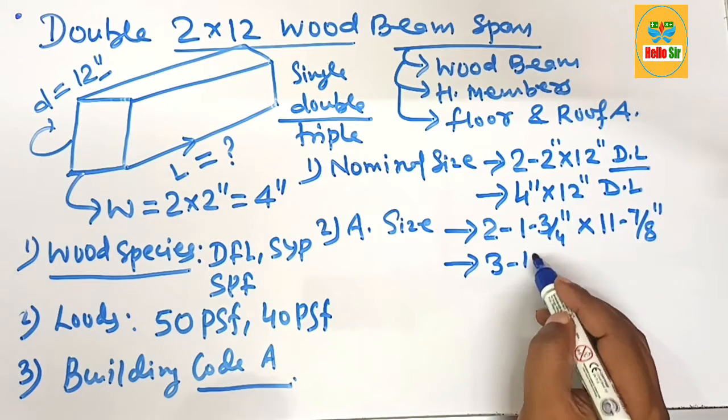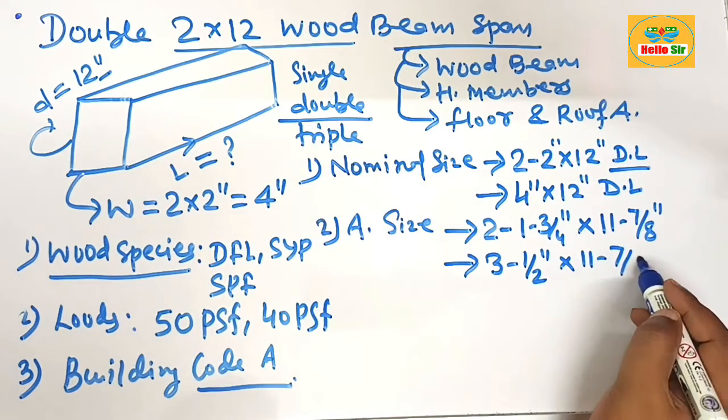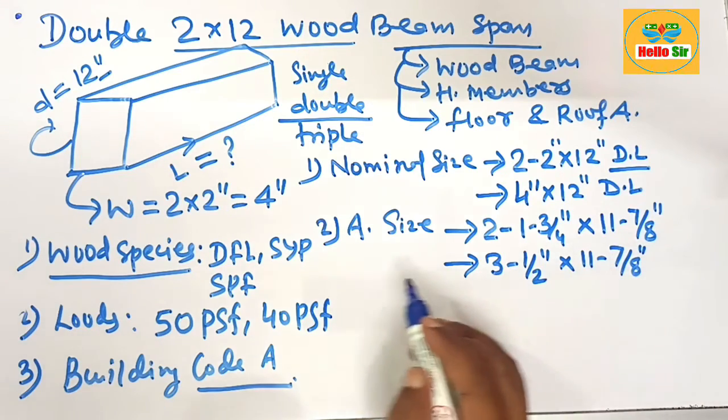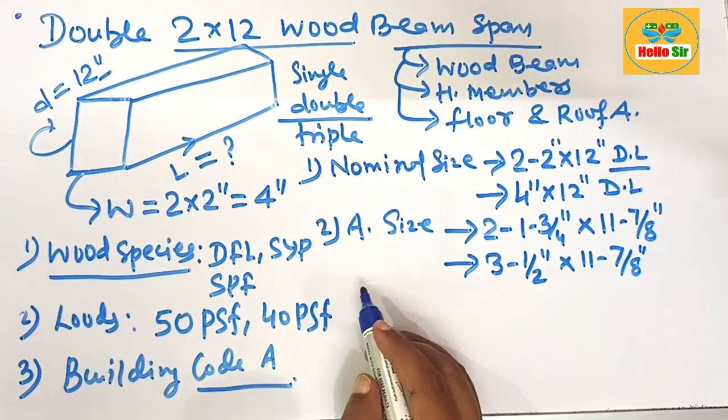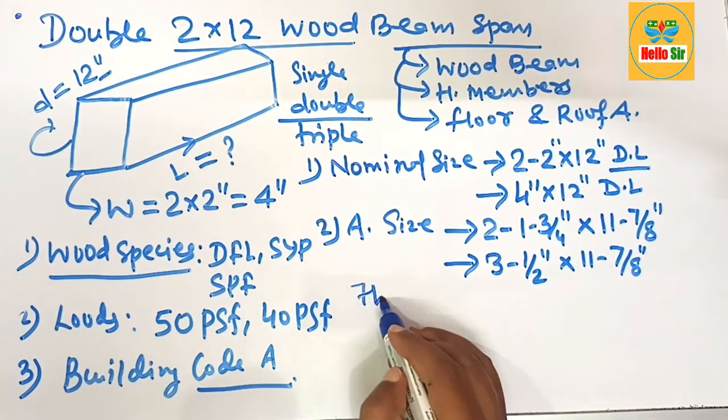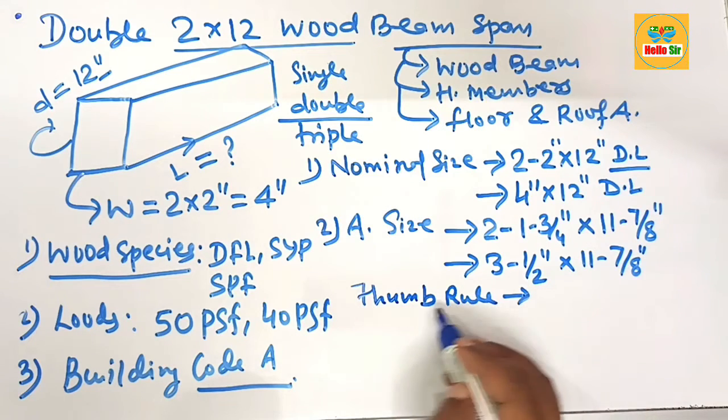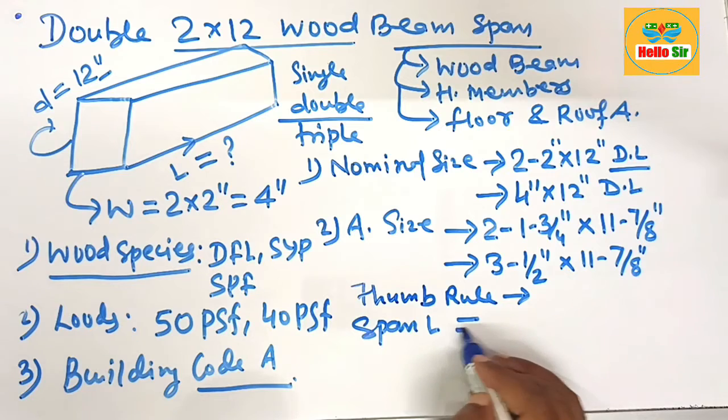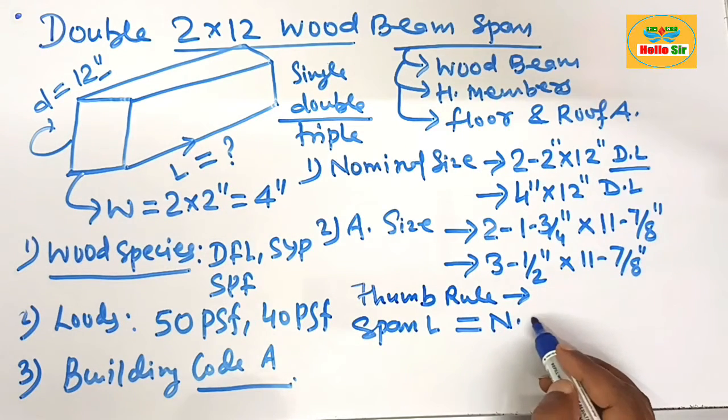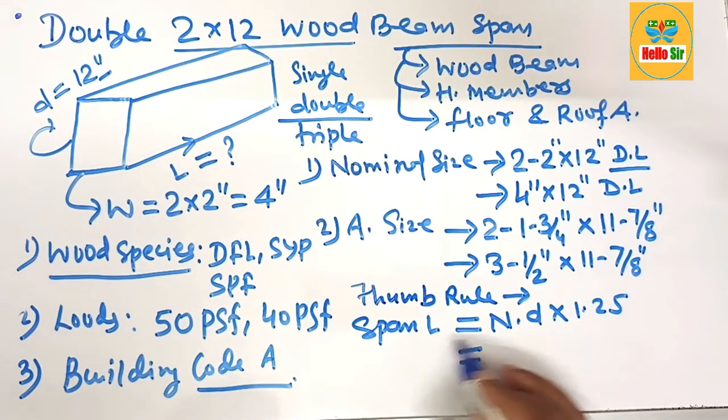This can also be written as 3 and 1/2 inches by 11 and 7/8 inch. Now calculate the span length for a double 2 by 12 wood beam. There is a thumb rule to calculate the span length: for double ply wood beam, it equals the nominal depth multiplied by 1.25.